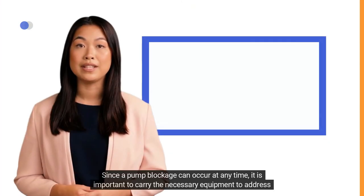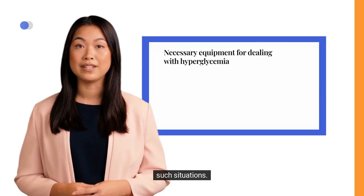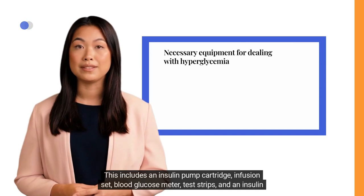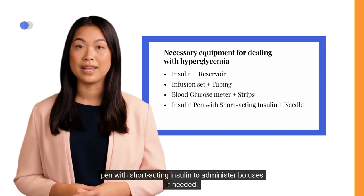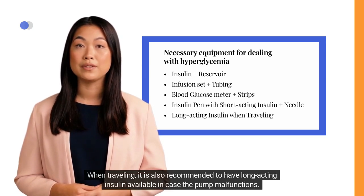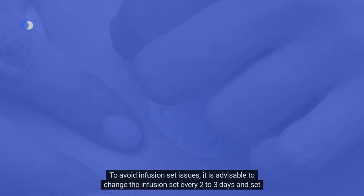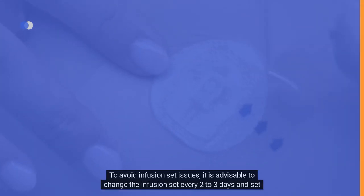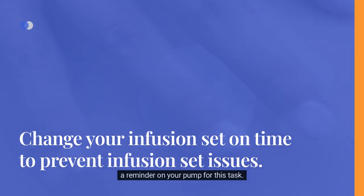Since a pump blockage can occur at any time, it is important to carry the necessary equipment, including an insulin pump cartridge, infusion set, blood glucose meter, test strips, and an insulin pen with short-acting insulin. When traveling, it is also recommended to have long-acting insulin available in case the pump malfunctions. To avoid infusion set issues, change the infusion set every 2 to 3 days and set a reminder on your pump for this task.